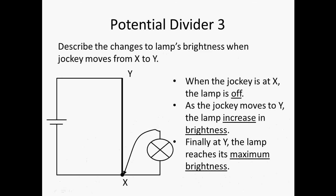Let's say I want to describe the changes of the lamp's brightness when the jockey moves from X to Y. So let's say this jockey here moves towards Y. What happens is that when you move towards Y, the lamp is initially off at this point. Then as the jockey moves towards Y, the brightness of the lamp increases, and finally at Y it will reach its maximum brightness. You realize that the explanation is quite simple and nothing special about it.